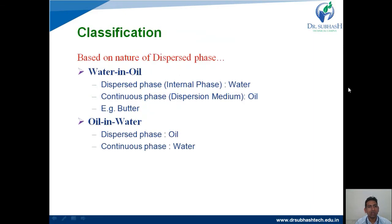Classification of emulsion based on nature of the dispersed phase — mainly two types: water-in-oil and oil-in-water. In water-in-oil emulsion, the dispersed phase or internal phase is water, and the continuous phase or external phase is oil.